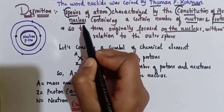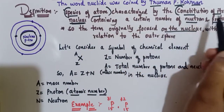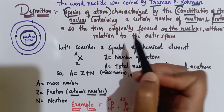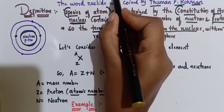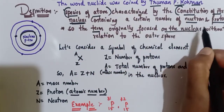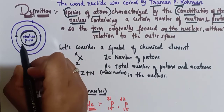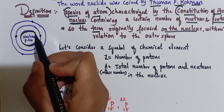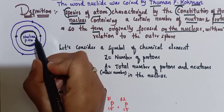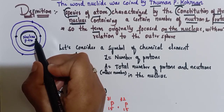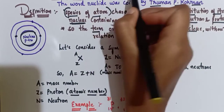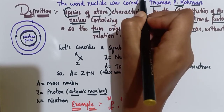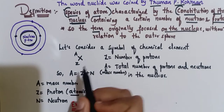The term originally focused on the nucleus — containing a certain number of neutrons and protons — without relation to the outer sphere. The term nuclide is only focused on the nucleus, that is on the number of protons and neutrons, and does not have any relation to the outer sphere, that is the electrons. Simply remember: nuclide means neutrons plus protons.